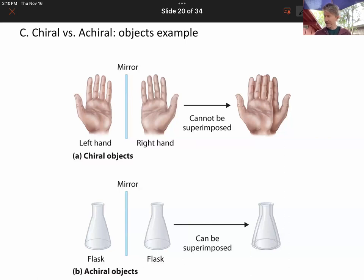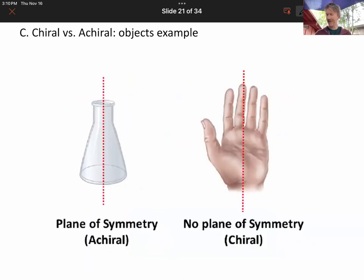And so, the hands, as we showed, the flask, on the other hand, does have a plane of symmetry. So, this spot right here and this spot right there are mirrored identically, while this spot and this spot are not.